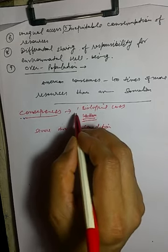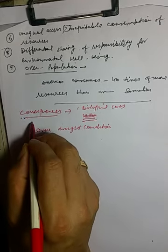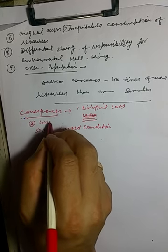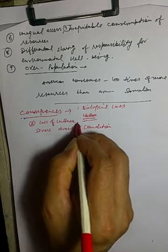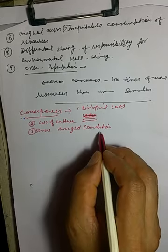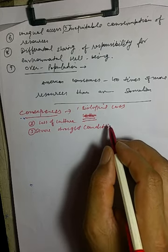And number two we can quote over here is loss of culture. Third, we can write severe drought conditions or floods.